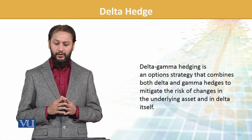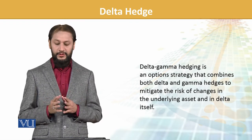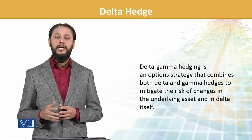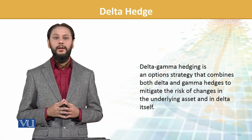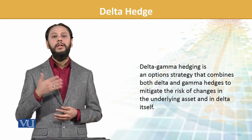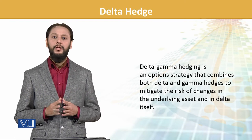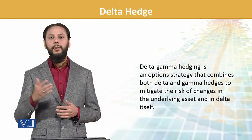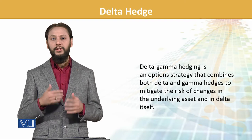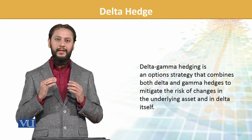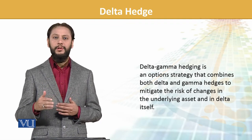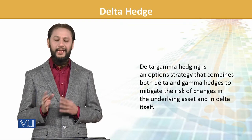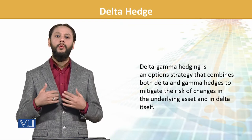Delta-gamma hedging is an option strategy that combines both delta and gamma hedges to mitigate the risk of changes in the underlying asset and in delta itself. We bring in the concept of gamma because delta is not a fixed or locked position — delta itself can change over time. The change within delta is captured through gamma. So if historically delta was 0.8, gamma measures how much that delta itself can shift. Please re-listen if needed as this is a new area.